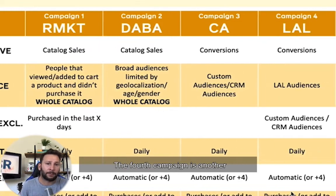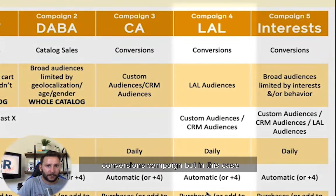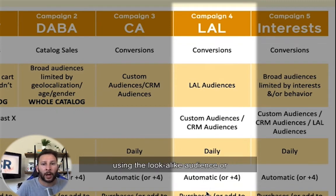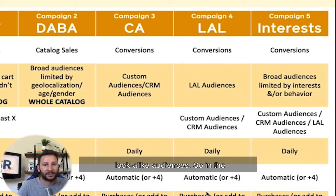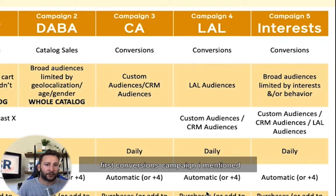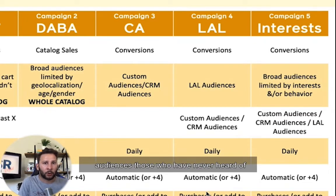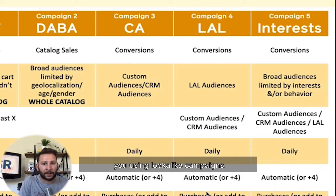The fourth campaign is another conversions campaign, but in this case you will be targeting cold audiences using lookalike audiences. So in the previous conversions campaign it was for warm audiences — retargeting. This one is for cold audiences, those who have never heard of you, using lookalike campaigns.